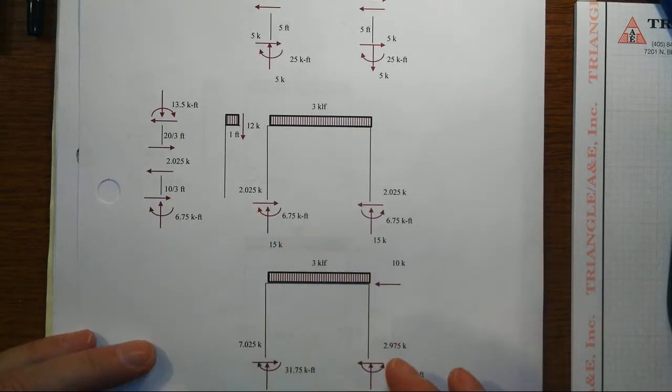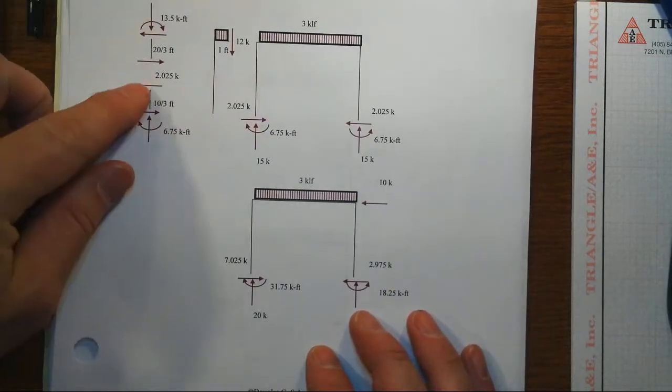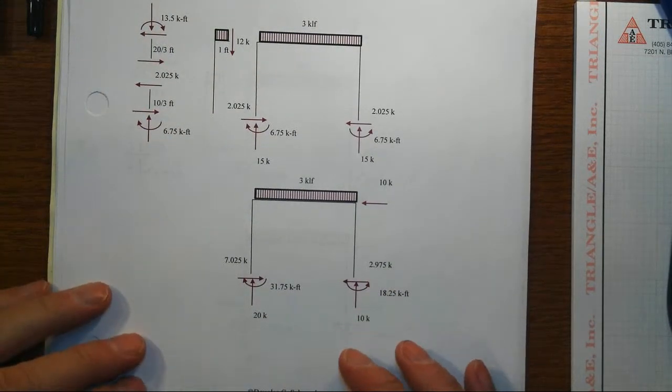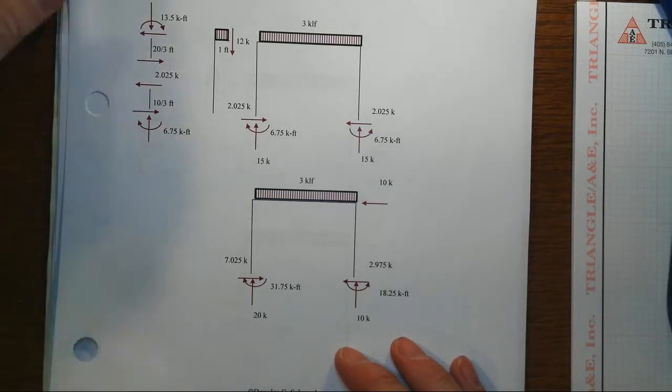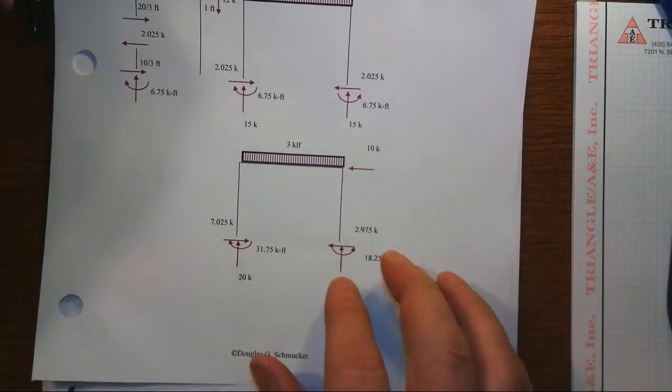So that's something we could consider using later on, sort of a one-third rule for certain kinds of situations for the columns that goes along with this one-tenth rule for the beams.